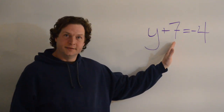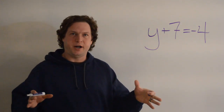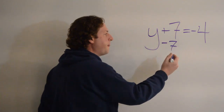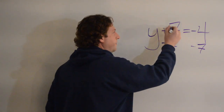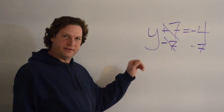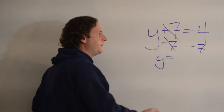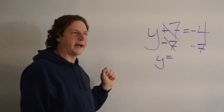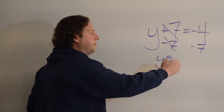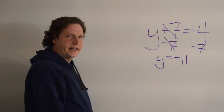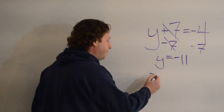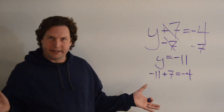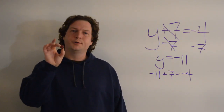y plus 7 equals negative 4. Let's use our process. I have a positive 7 with the variable, so I want to isolate the y. I'm going to subtract 7 from both sides. This positive 7 and this negative 7 cancel out, which leaves my y by itself. Over here I have negative 4 minus 7. If you think about a number line, we're at negative 4 and we have to go negative 7 more. We have two negatives — we're adding them together to get negative 11. y equals negative 11. We can check this by plugging in: negative 11 plus 7 equals negative 4. That's correct. Grape number three for those keeping count.